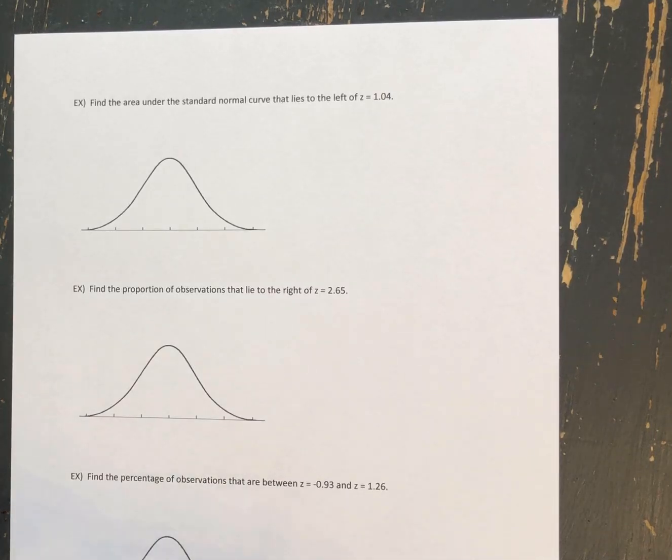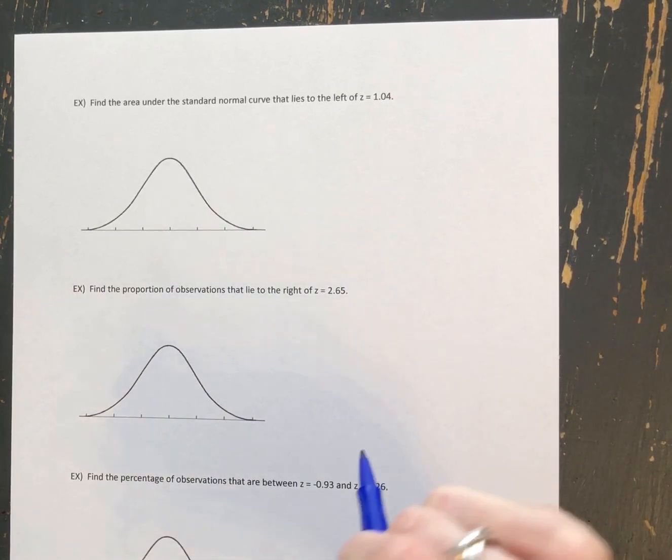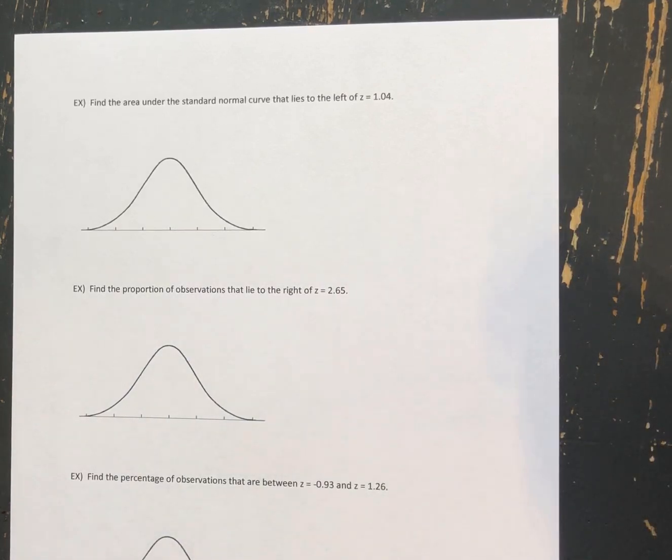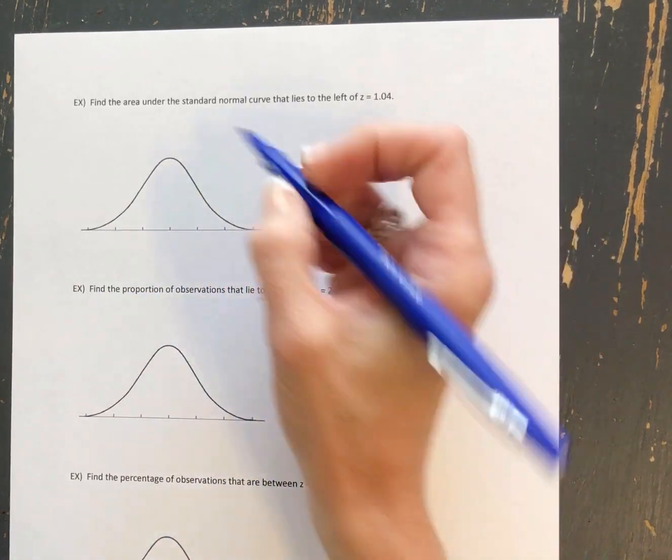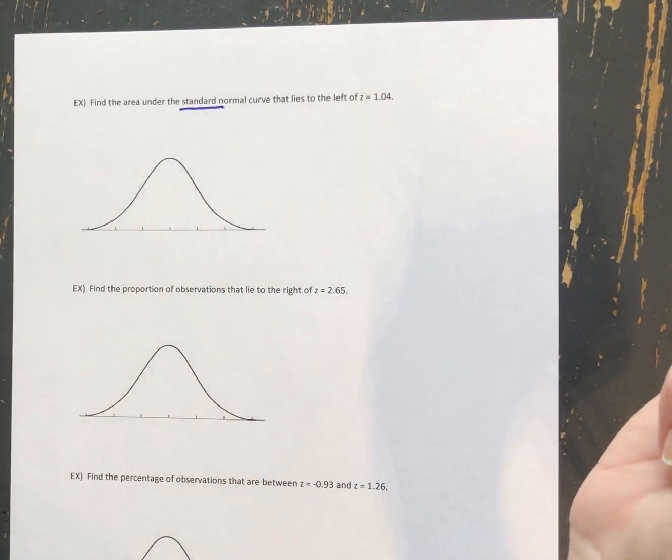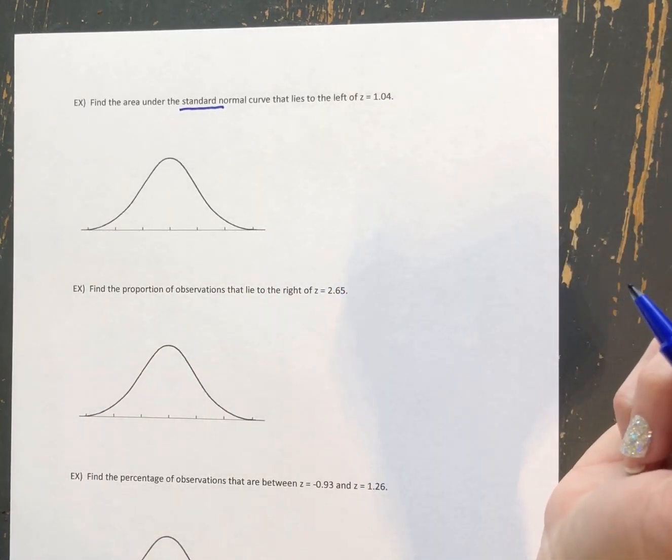This video is going to show us how to find areas underneath standard normal distribution curves. We're going to look at finding areas to the left of a value, finding areas to the right of a value, and then finding areas in between two values. So the first example here asks us to find the area under the standard normal curve that lies to the left of z equals 1.04.